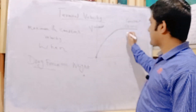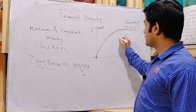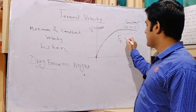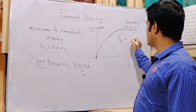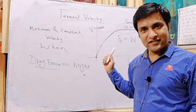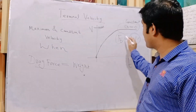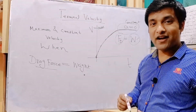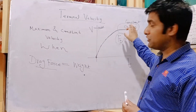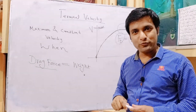So what is the condition here? The drag force has become equal to the weight of the object. The paratrooper's weight has become equal to the drag force. That's why he has attained constant maximum velocity and his acceleration has become zero.